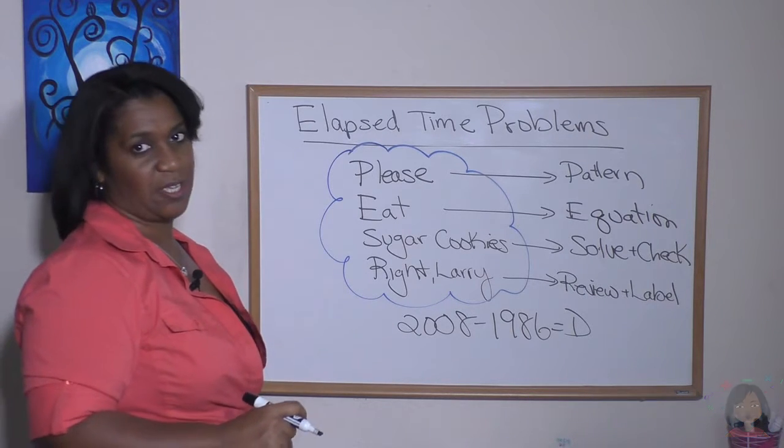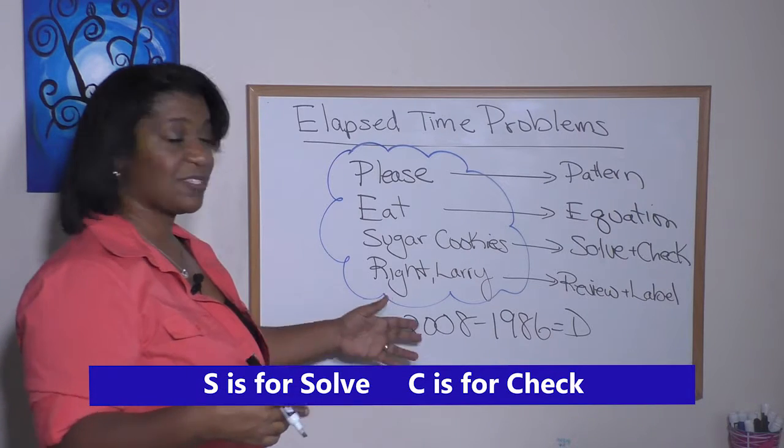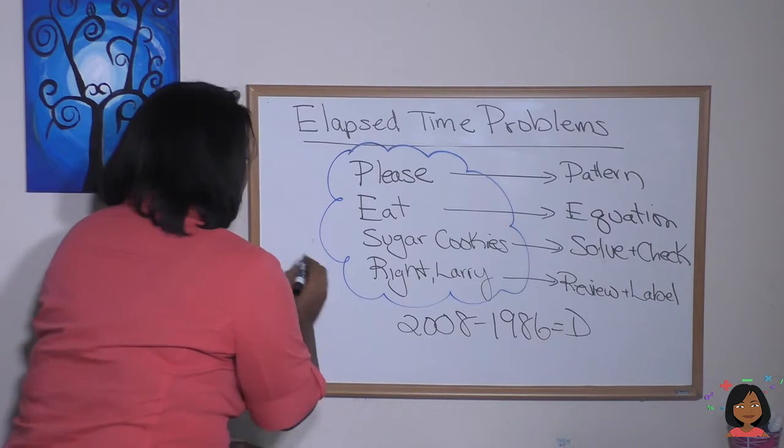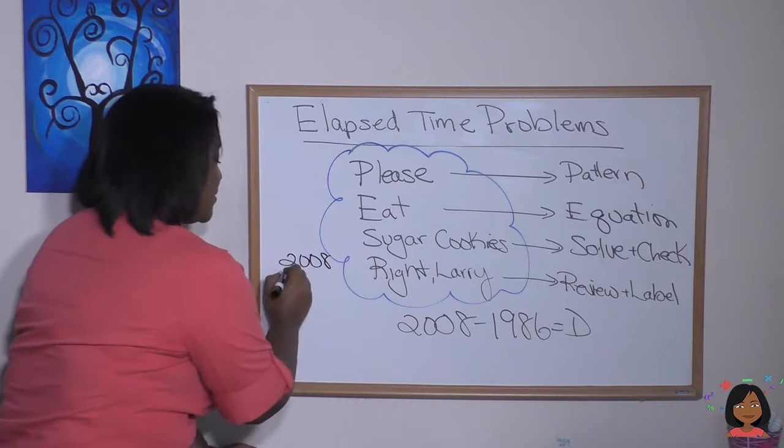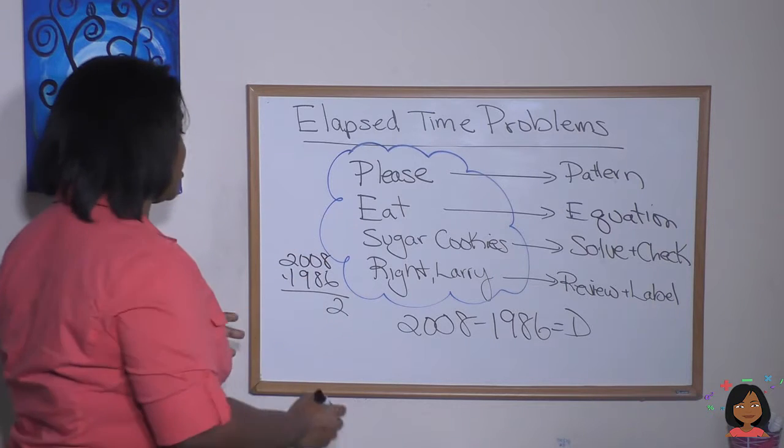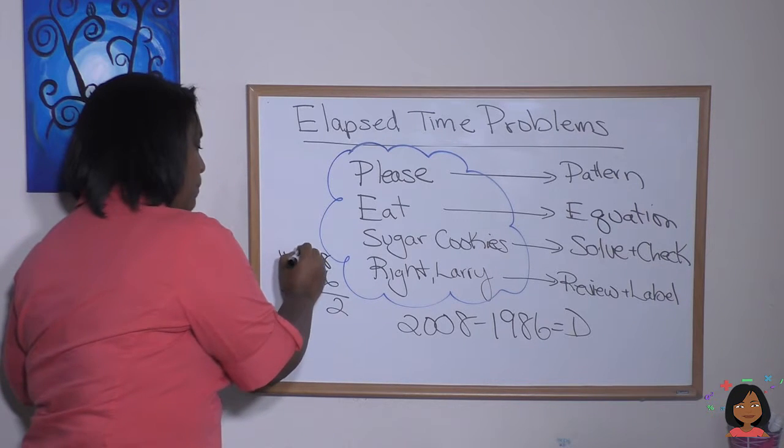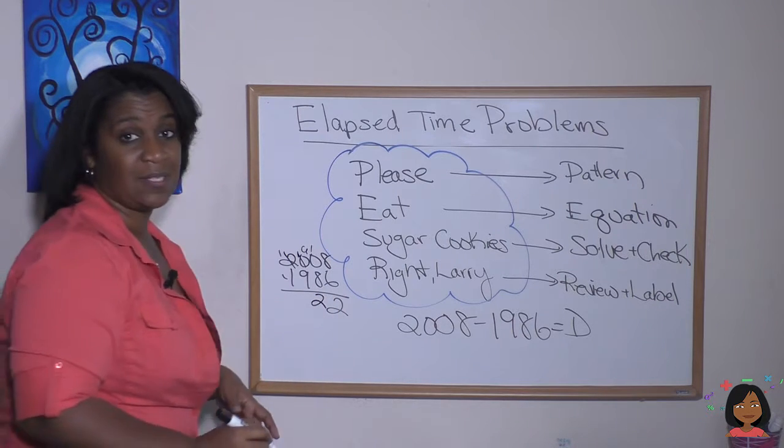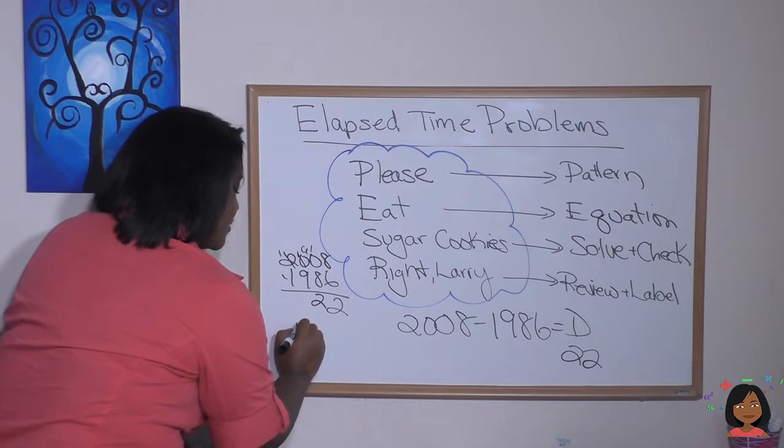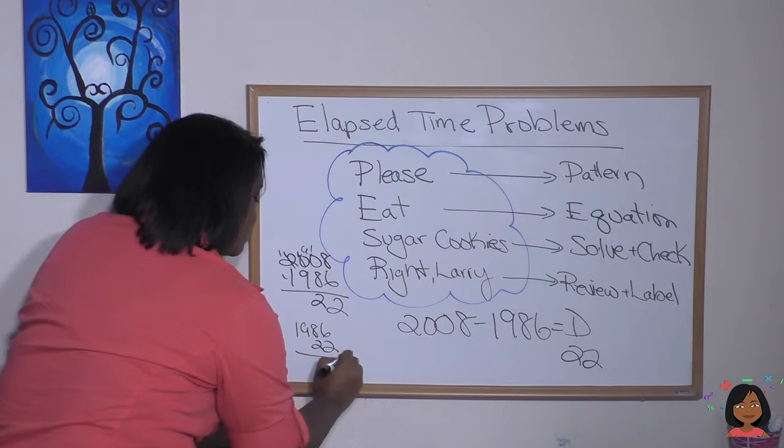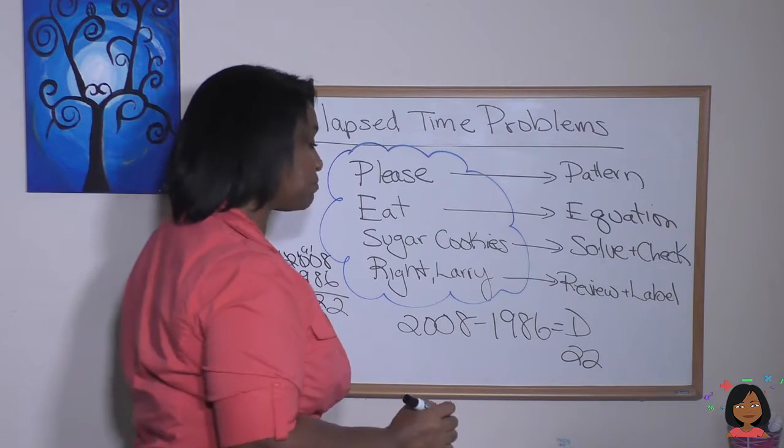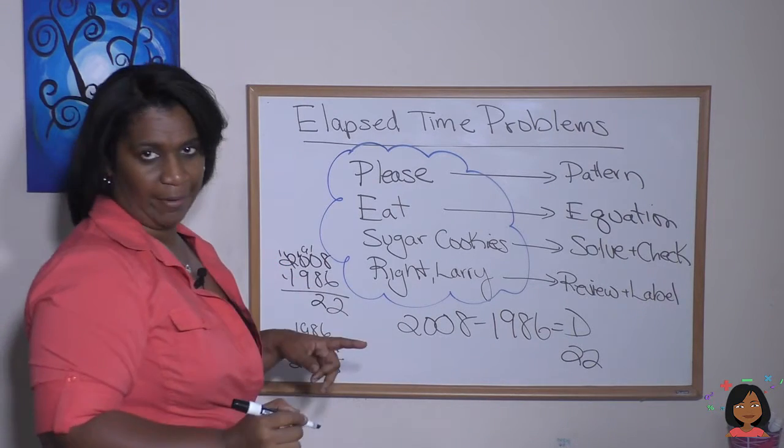Now let's do Sugar Cookies, Solve and Check. This is straight subtraction. 2008 minus 1986. That means 22 is our answer, and we're going to check this by adding 1986 and 22 years, and that would give us 2008, so we're looking good.